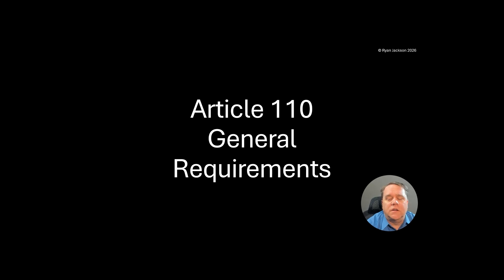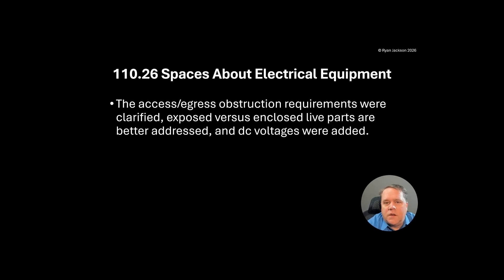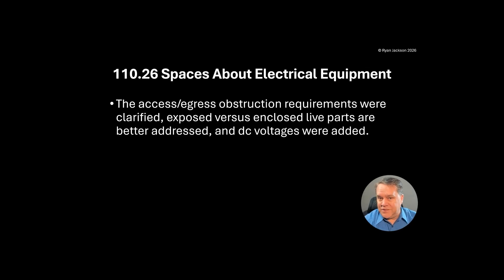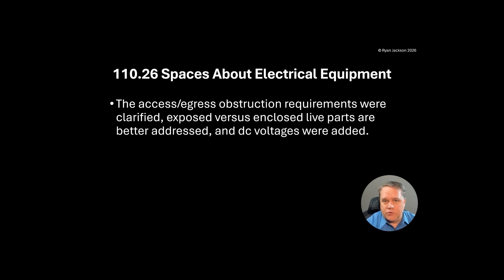Article 110 — General Requirements. 110.26: Spaces About Electrical Equipment. The access/egress obstruction requirements were clarified — I would say it is a clarification, though you could argue it's an expansion. That rule is a big deal. Also, exposed versus enclosed live parts were better addressed — I love that change. And DC voltages were added as well.